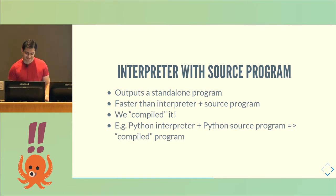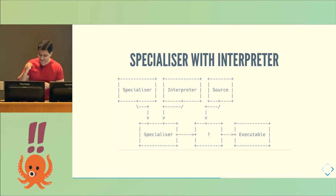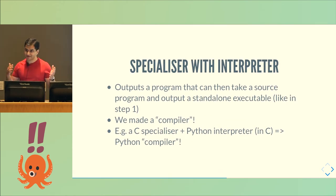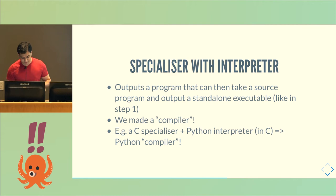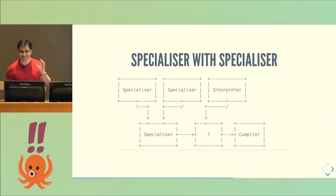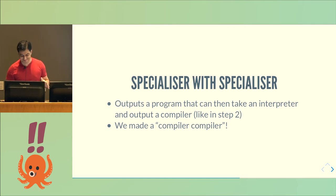Taking this one step further: what if you specialized a specializer itself with respect to an interpreter? You take a specializer, jam an interpreter into it, do inlining and unrolling, and at the end you have something that can take source code the interpreter knows how to interpret and output a standalone executable — just like step one. We've made a compiler, because that's what a compiler does: takes source code and outputs a standalone executable. So if the Python interpreter is written in C and we have a specializer that knows how to specialize C, we get something that takes Python source code and outputs a standalone executable. Final trippy step: what if you specialize a specializer with another specializer? You jam one specializer into the other, and you get a program that can take any interpreter and output an equivalent compiler. We've made a compiler compiler.